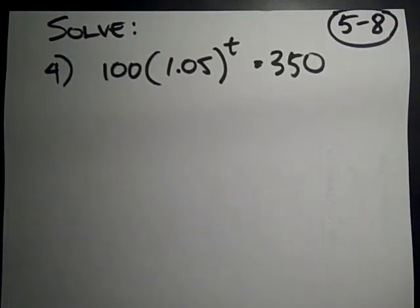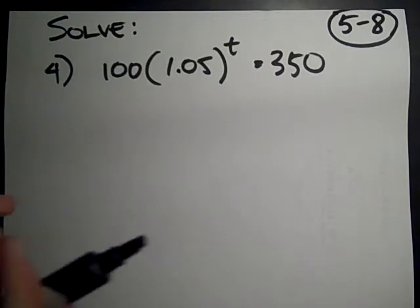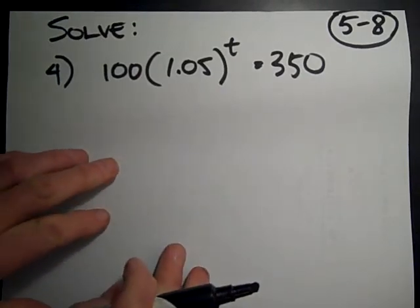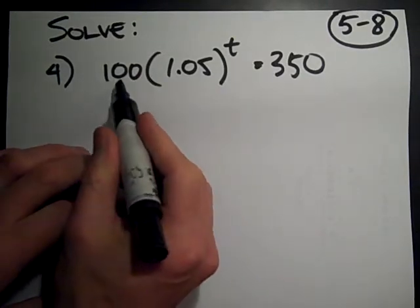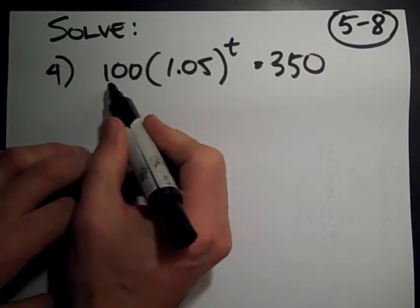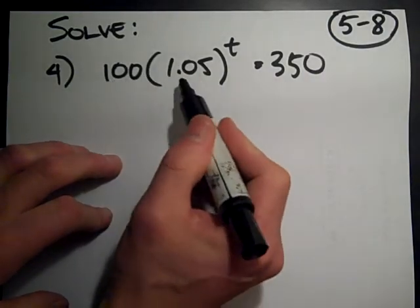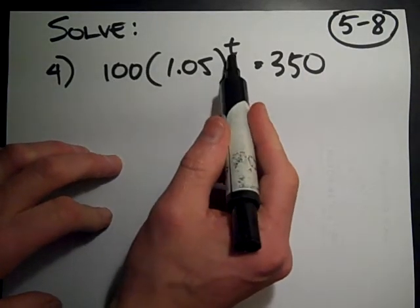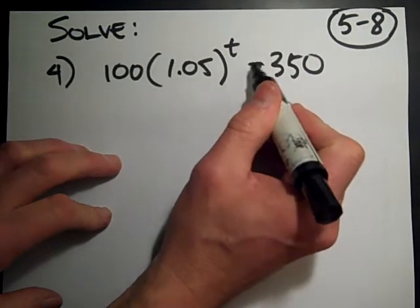Okay, here we are. We're at the end of the chapter, at 5-8, and we've just got two problems here we're going to solve. Number 4 is set up quite typically for these: 100 times, in parentheses, 1.05 raised to the exponent t. That equals 350.